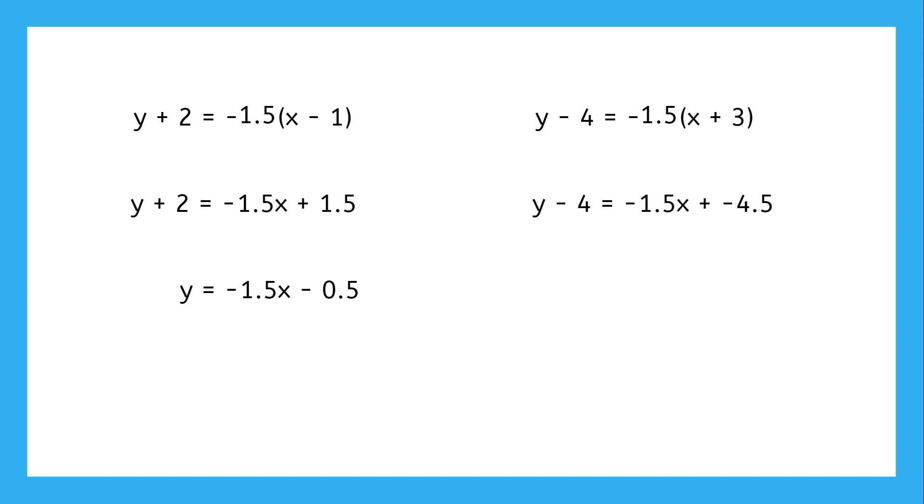For the version on the right, we distribute that slope, and then we add 4 to both sides. And once you look at that, they really are the same equation.